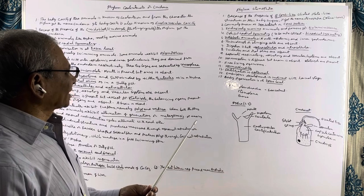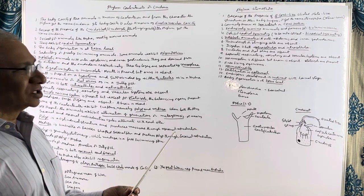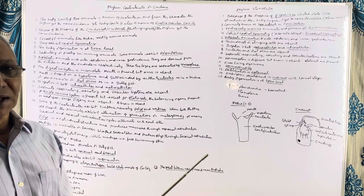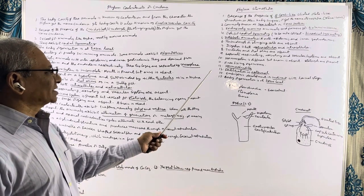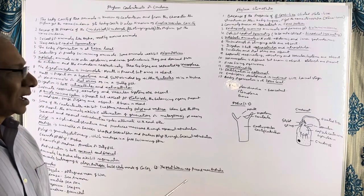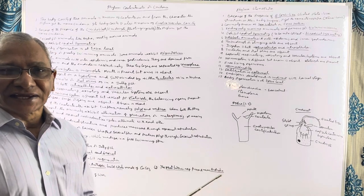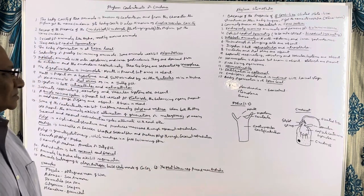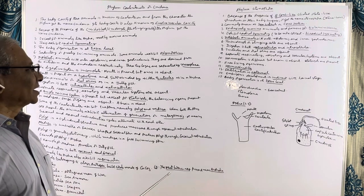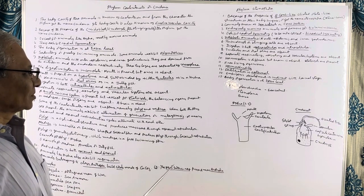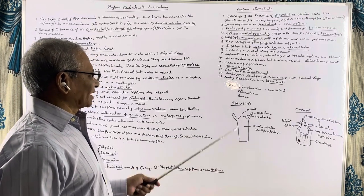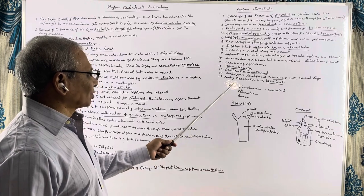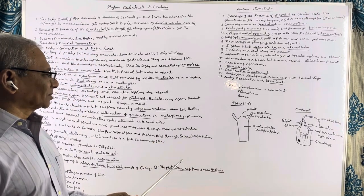None of the ctenophores are sedentary. All ctenophores are hermaphrodites, meaning the same animal has both male and female reproductive systems. Fertilization is external, taking place outside in seawater. Embryo development is indirect with one or more larval stages, and the body organization is at tissue level. Examples include Pleurobrachia, commonly known as sea walnut, Ctenoplana, Beroe, and others.